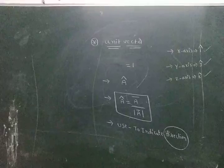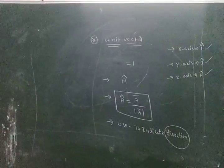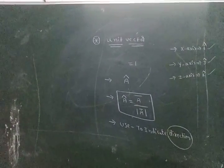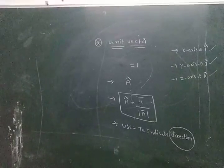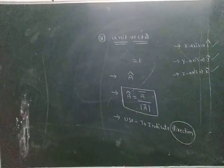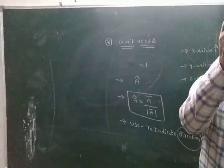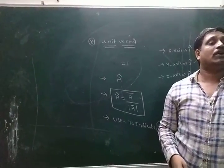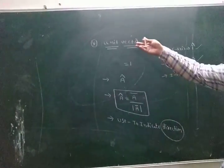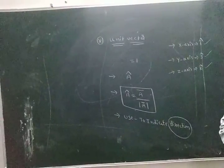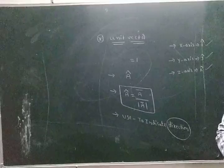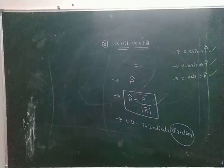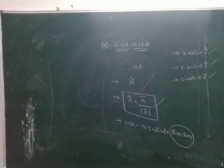î, ĵ, and k̂ are unit vectors when the body is moving along the X axis, Y axis, and Z axis respectively. The vector whose modulus becomes one is called a unit vector. It is mathematically represented as A_cap. The formula for A_cap is A_bar divided by modulus A_bar.